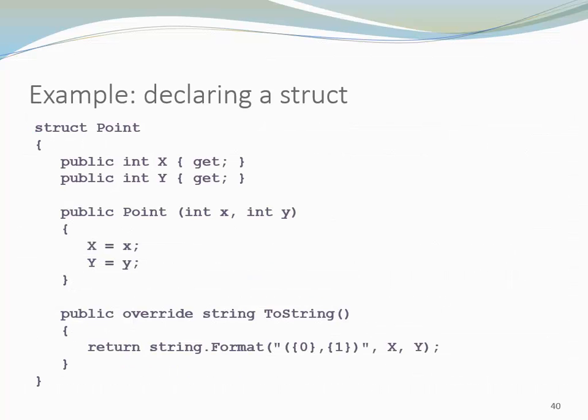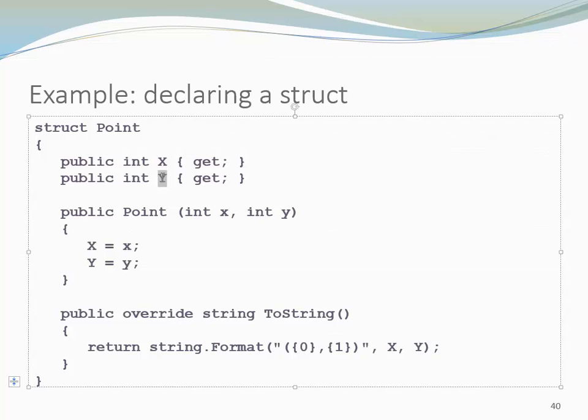Here is an example of a struct that has been declared. This is a point representing a point on the Cartesian coordinate system. We have an x and a y. Notice we have a getter only. So this is an immutable type. We don't allow to have the point changed once it has been created.